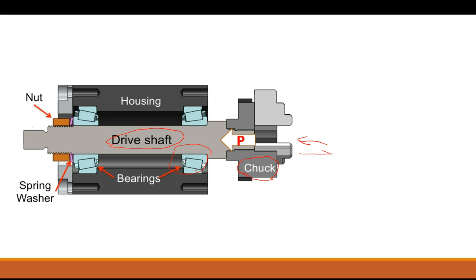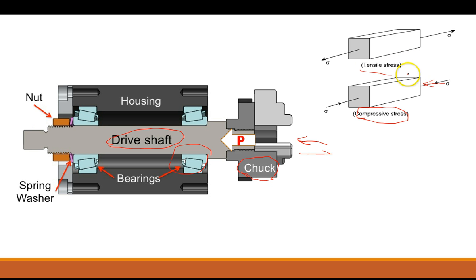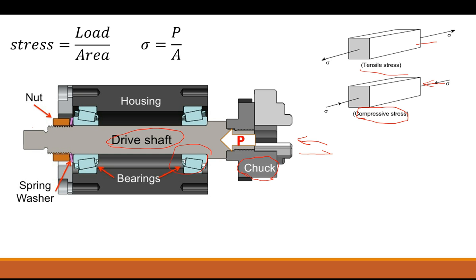So what goes on when you have an axial load in this lathe drive shaft? You have an axial load which develops a stress. In this case it will be a compressive stress because the load is being applied inward along the axis, versus a tensile stress where the shaft would be pulled and extending the axis. So you develop a stress, and the equation is stress equals load over area — the area of the drive shaft.